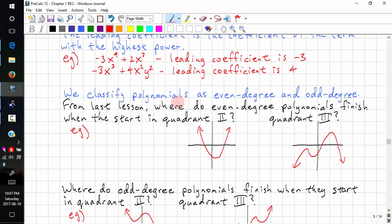We can classify polynomials as even degree or odd degree. And from the last lesson, where do even degree polynomials finish when they start in quadrant 2? This is quadrant 2. They finish in quadrant 1. And here, we have a global min.